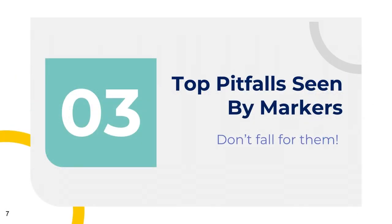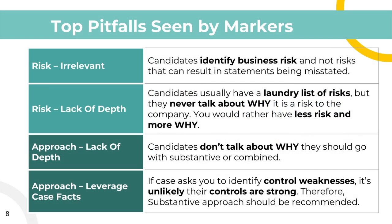Now let's go into the top pitfalls I see as a marker that candidates can easily avoid. The first is that the risk listed is irrelevant — many times students talk about all the risks in the case except for the ones that actually cause financial statements to be misstated, like a change in controller, no controls, bank covenants, or bonus payouts. The next common pitfall is no depth — everyone just puts bullet points and a laundry list of risks without explaining why it is a risk. Without the why, you're never going to get a C. You can't just say there's a new controller; you have to say that because there is a new controller, there can be more errors as they are new to the role.